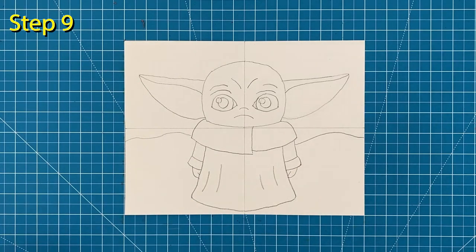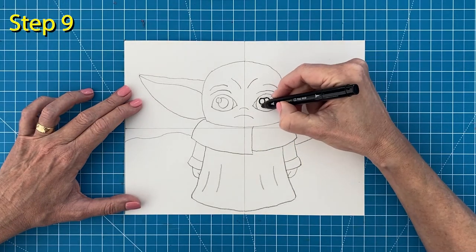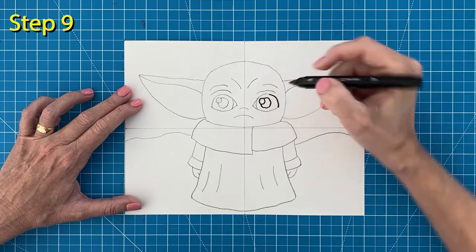Step number nine, tracing time. I'll use my black marker to go slowly over all those pencil lines to see how well I can match them.